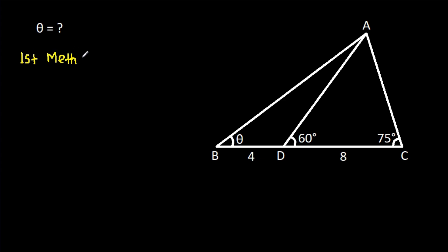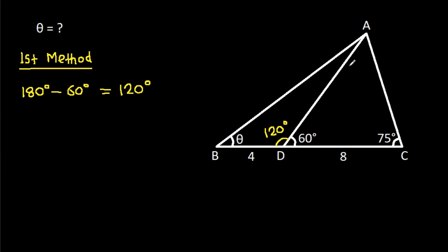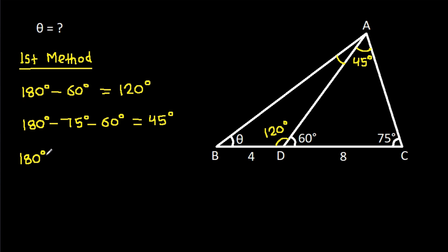The first method. This angle will be 180 degrees minus 60 degrees, that will be 120 degrees. And this angle will be 180 degrees minus 75 degrees minus 60 degrees, that will be 45 degrees. And this angle will be 180 degrees minus 120 degrees minus theta, that will be 60 degrees minus theta.